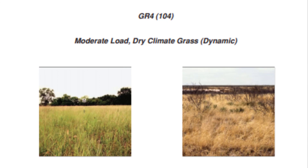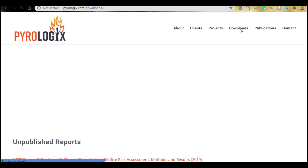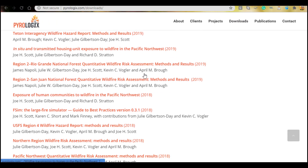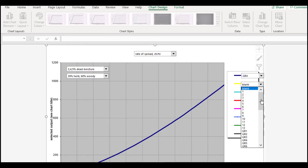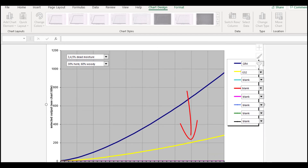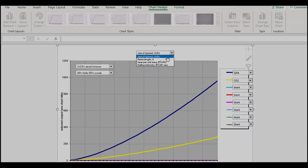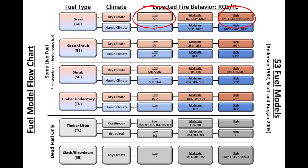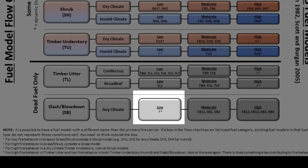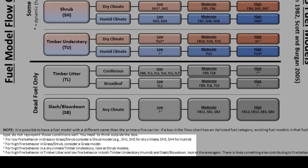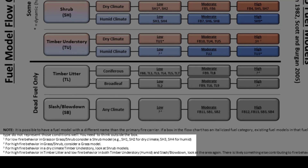This number at the top is also a helpful reference. Some people refer to the fuel models only by these numbers, and some people refer to them by their names, so it's good to be familiar with both. Another very useful tool when you have access to a computer is the Compare Models for Excel spreadsheet, linked in the description of this video. Which of these fuel models best captures the expected or observed fire behavior? In this case, GR2 seems like a good match. If you do not find one that matches, try the fire behavior fuel models in the other categories. Note that it's possible to have a fuel model with a different name than the primary fire carrier. If the box in the flow chart has an italicized fuel category, existing fuel models in that fuel type do not represent those conditions well, and you'll need to think outside the box.